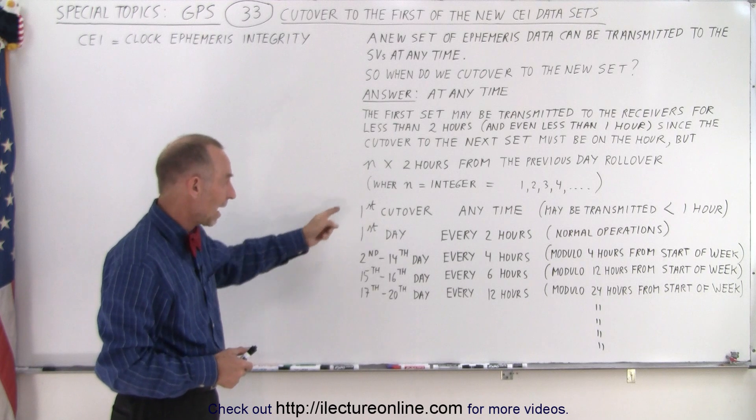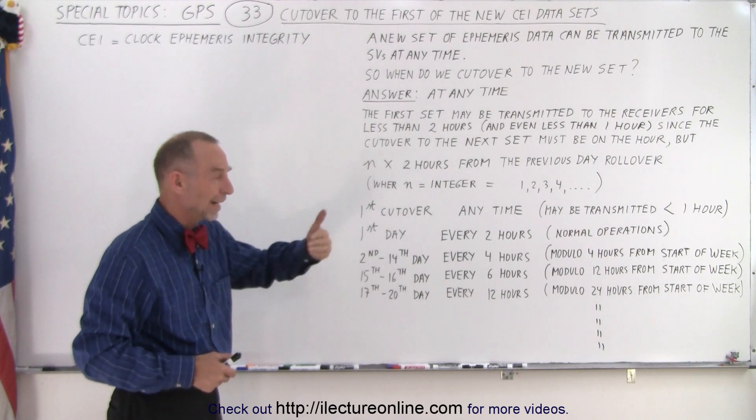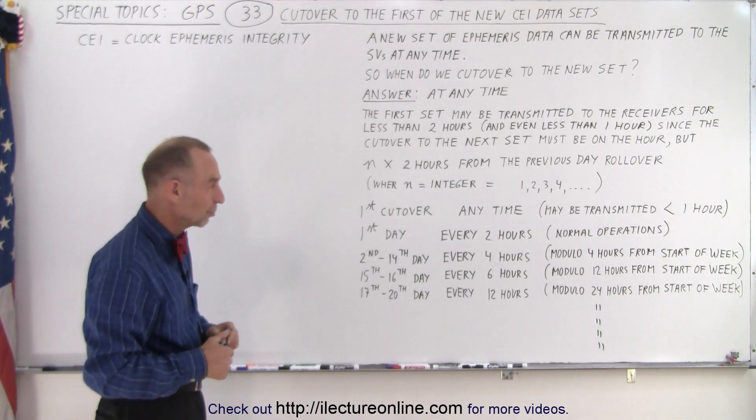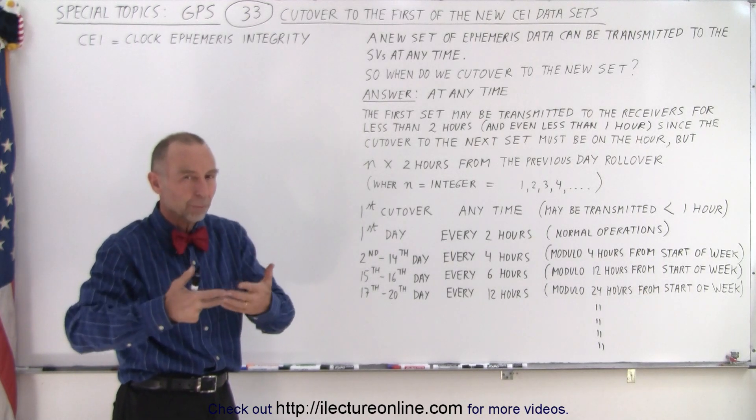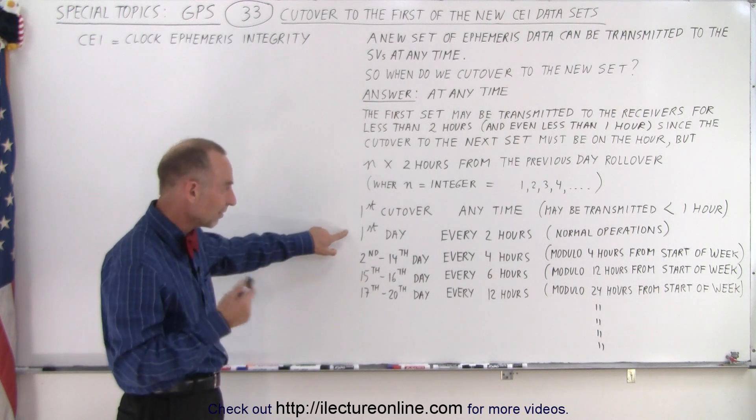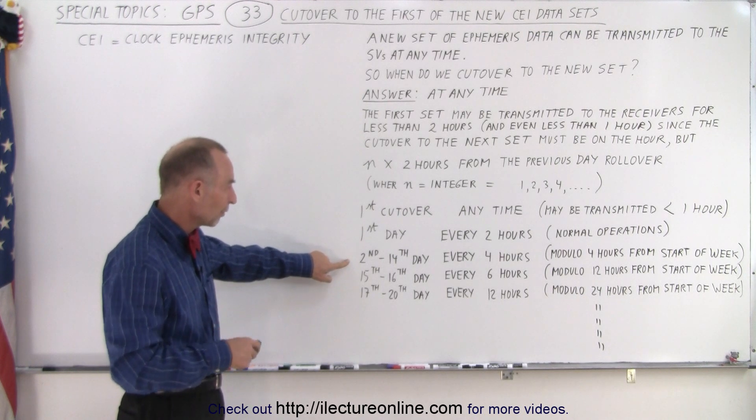On the very first day, after the first cutover, you're going to cut over every two hours—that's the normal operation. And obviously after one day, you'd like to get a new set of ephemeris data so that you can send the most accurate data to the receivers.